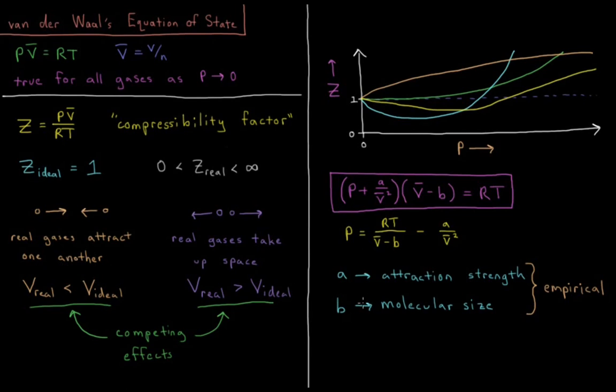B is the effective molecular size. Note that for B we're subtracting it from molar volume, so its unit has to be some kind of molar volume. B is the effective size per particle there, or per mole of particles. B accounts for this effect that the real gases take up space.